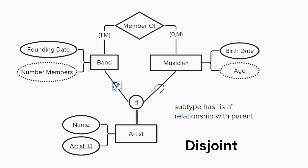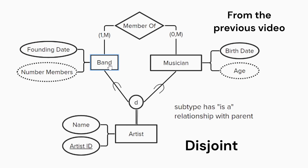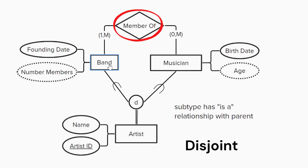In some cases, a band might consist of a single musician, but in this case the name of the band will be distinct from the name of the musician and have its own artist ID. It is also possible to have artists that have not actually released any songs, which allows us to model the members of bands as musicians. A band is made up of musicians, as shown by the relationship connecting these subentities.